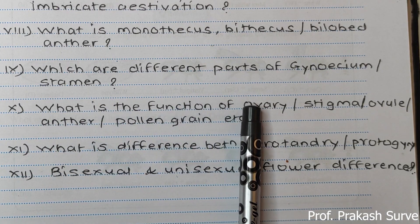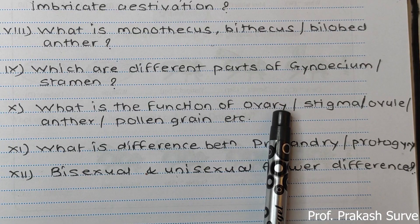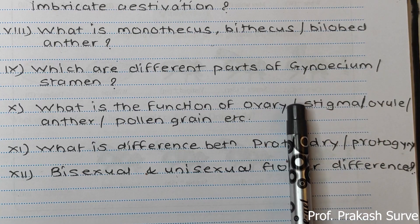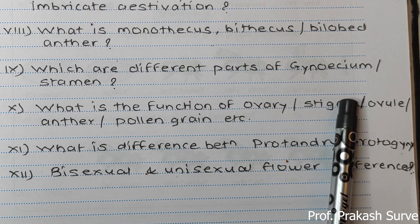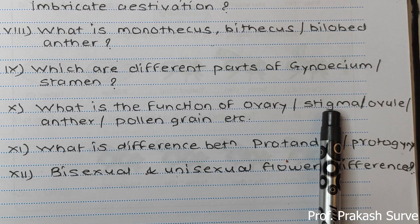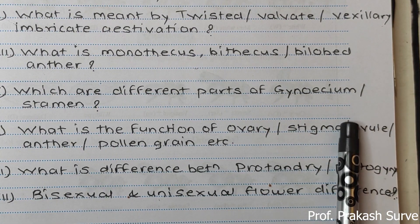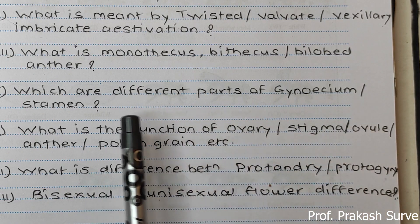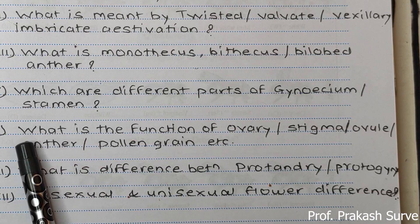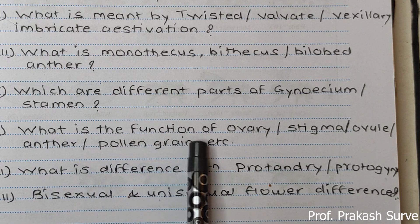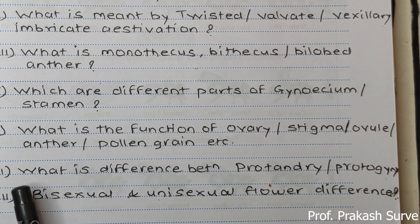What is the function of the ovary? The ovary converts into the fruit after fertilization. What is the function of the stigma? The stigma provides a receptive surface and secretes a sugary substance where the pollen grain germinates. What is the function of the ovule? The ovule develops to form the seed. What is the function of the anther? The anther produces the pollen grain. What is the function of pollen grain? Pollen grain produces the male gametes.